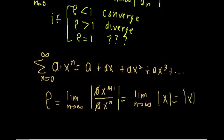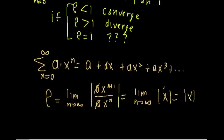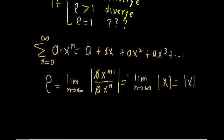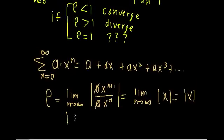So our rho is equal to the absolute value of x, which means that this series will converge if the absolute value of x is less than one. So here we have a criteria for converging. This series won't converge if x is equal to or greater than one.